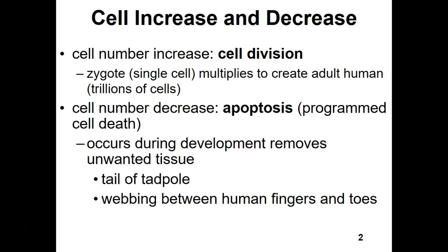Cell division occurs when we increase the number of cells in the body. We all started out as a single-celled organism called a zygote, produced when the male and female sex cells — sperm and egg — come together to form that initial single-celled organism. We are composed of trillions of cells, and actually even more bacterial cells than human cells, which is a fun fact.